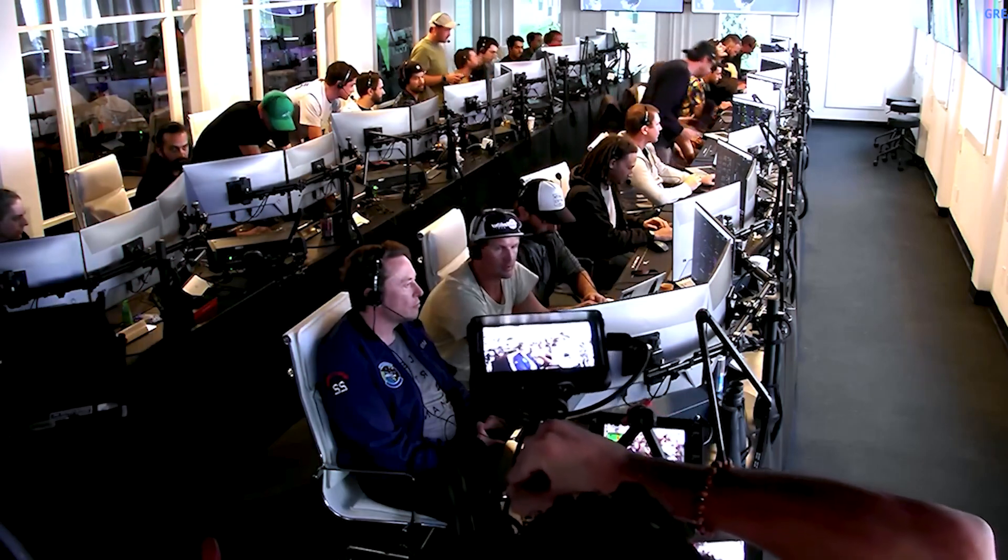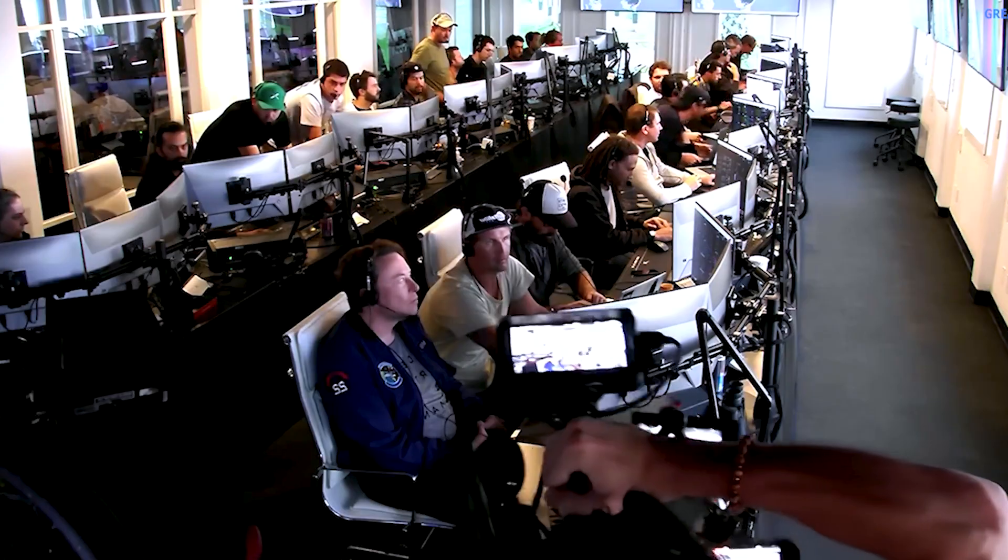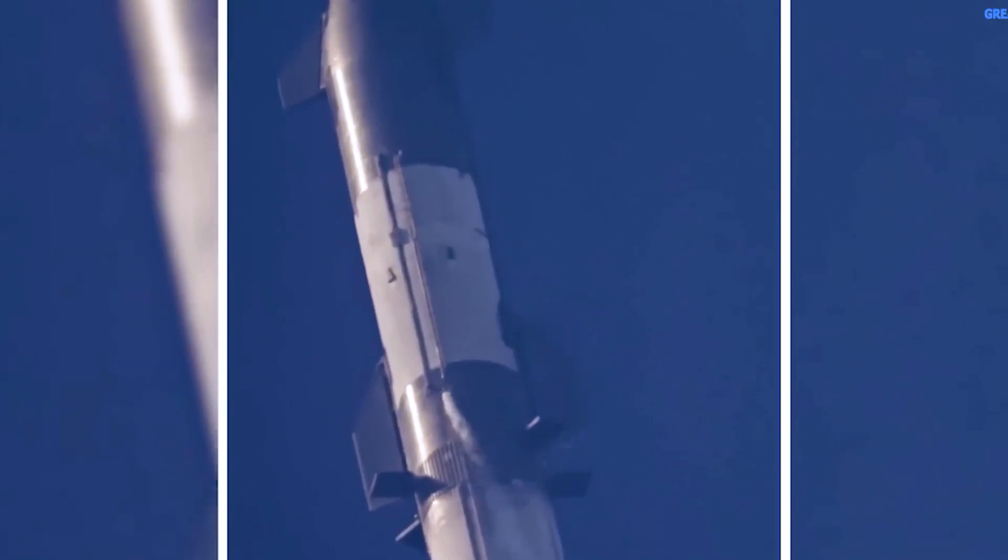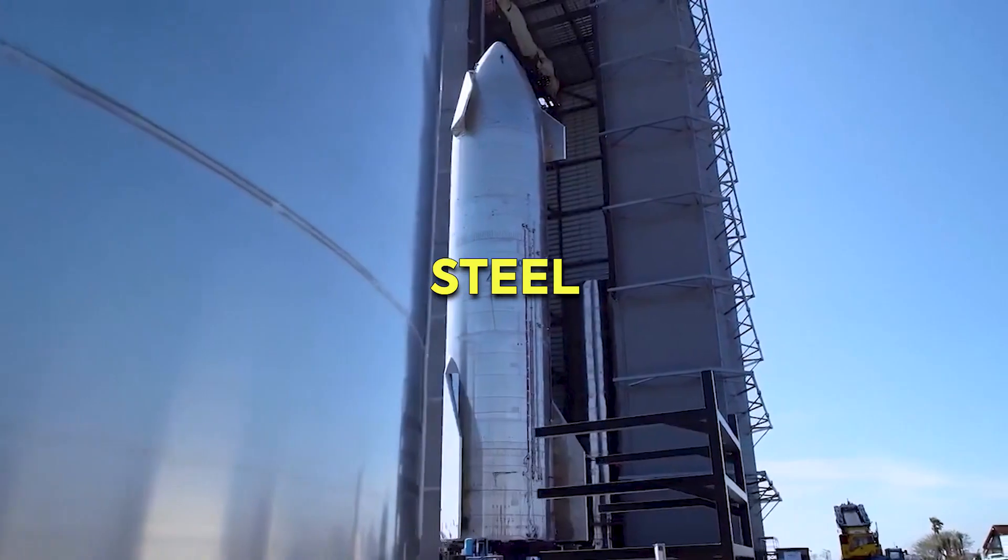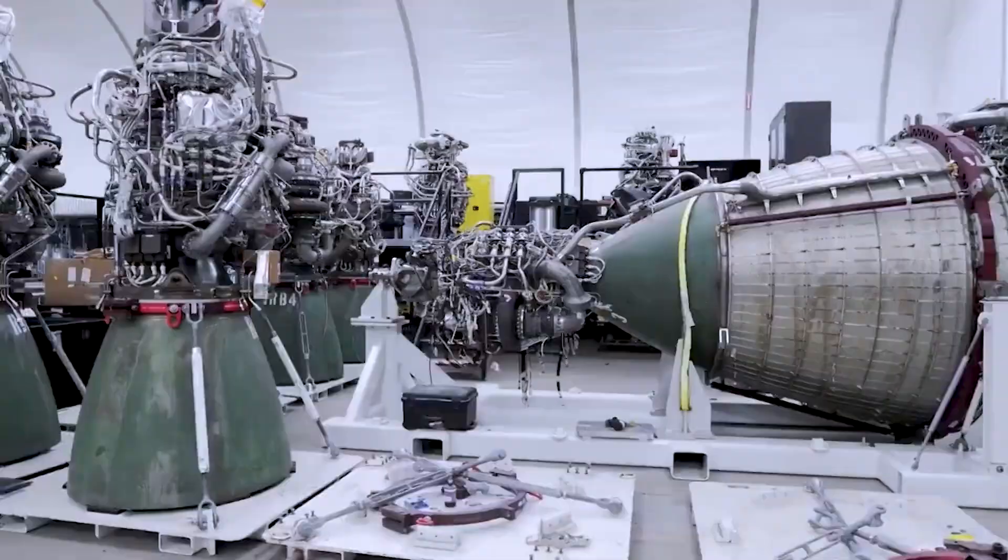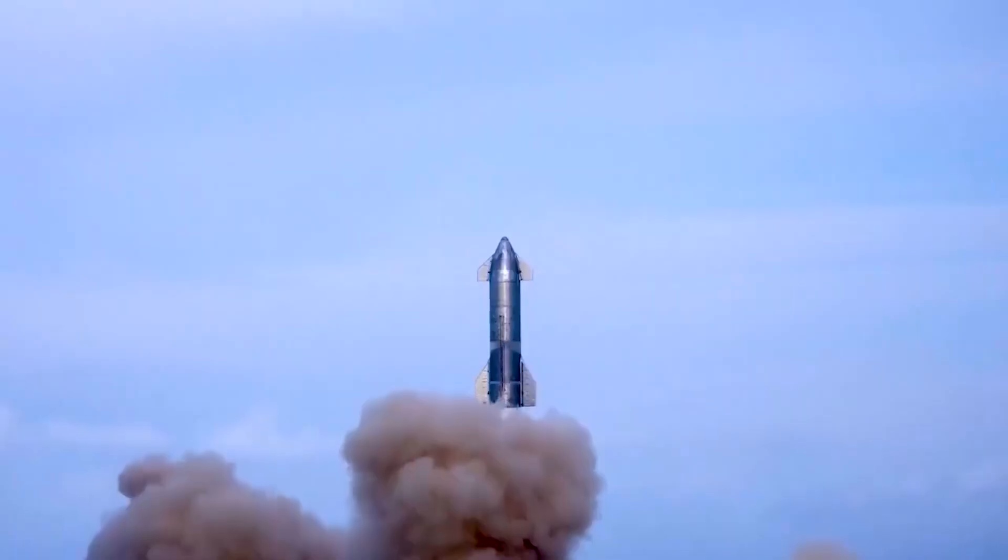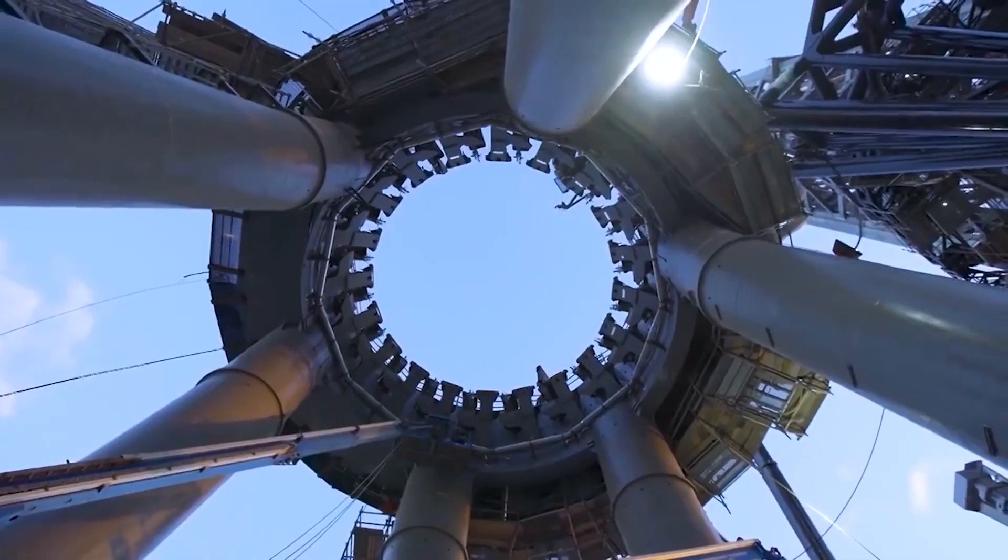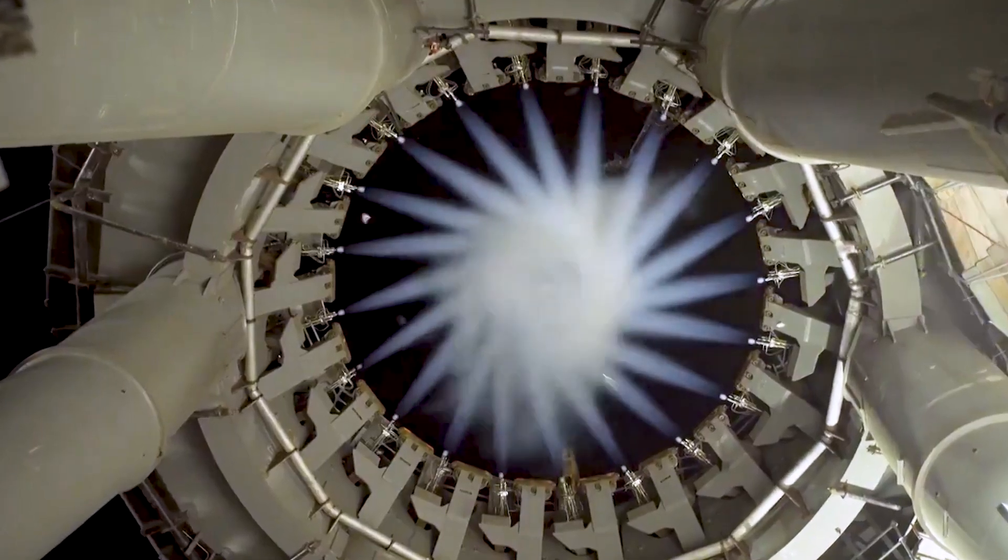Yet, despite the immense challenges, SpaceX remains undeterred. Another aspect of the Starship that drew significant skepticism was its unconventional choice of stainless steel as the primary construction material. Critics argued that stainless steel was relatively heavy compared to the carbon composites commonly used in the aerospace industry. They raised concerns about its impact on weight efficiency and overall performance.